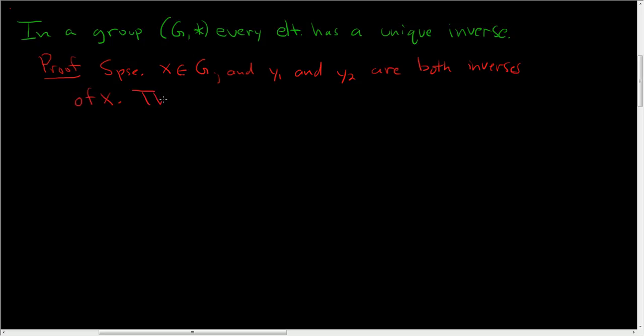So we'll start by writing y1. If we show y1 is equal to y2, then we are done, because x only has one inverse, and that's the whole point of the problem.